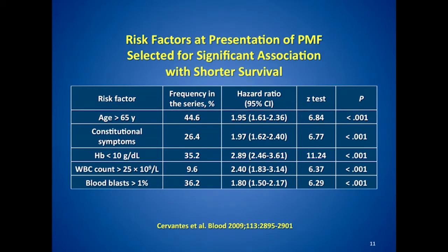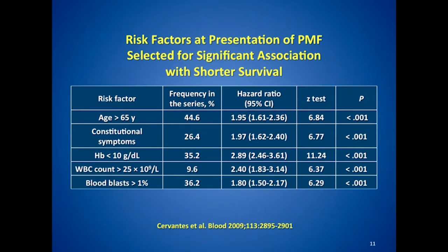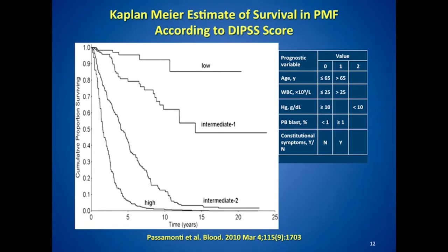Virtually all physicians tailor therapy based upon well-defined risk factors. The risk factors significantly associated with survival include: age, constitutional symptoms, hemoglobin less than 10, white blood cell count greater than 25,000, and blast percentage greater than 1% on peripheral blood smear. Patients with none of these variables have low-risk disease; those with two or more have progressively shorter survival.